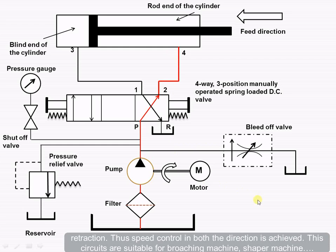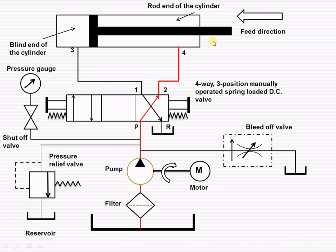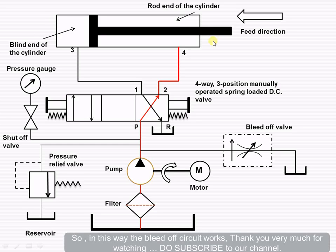Thus, speed control in both directions is achieved—during the forward direction as well as during the backward direction, or during the outstroke as well as during the retraction. These circuits are suitable for broaching machines, shaping machines, and other types of machines. In this way, the bleed-off circuit works. Thank you very much for watching. Subscribe to our channel.